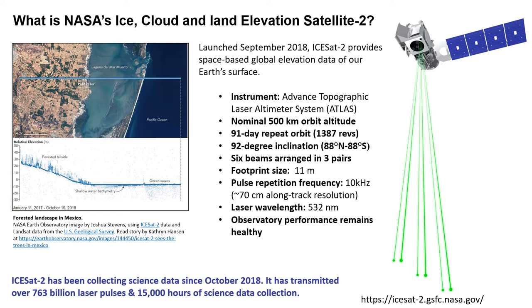NASA's Ice Cloud and Land Elevation Satellite-2 launched in September 2018. It is the highest resolution laser altimeter ever operated from space, having a footprint of 11 meters and taking one measurement every 70 centimeters. While the primary goal of ICESat-2 is measuring ice on both land and sea, it also measures all surface heights, including that of forests, inland water, atmosphere, and oceans.